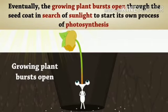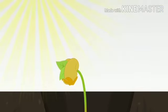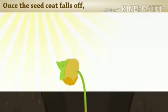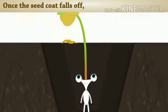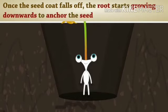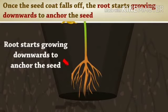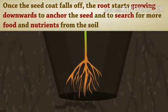To start its own process of photosynthesis. Once the seed coat falls off, the root starts growing downwards to anchor the seed and to search for more food and nutrients from the soil.